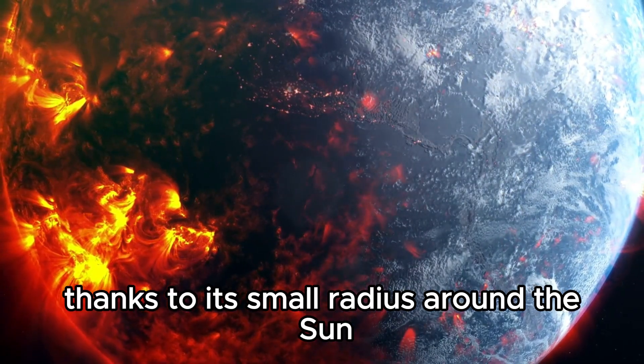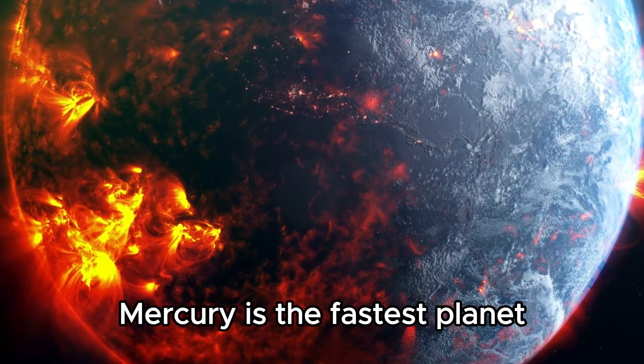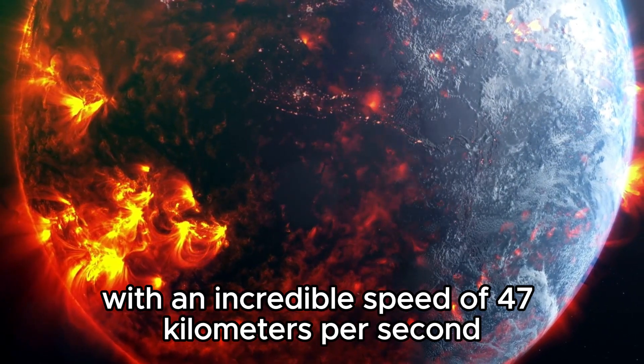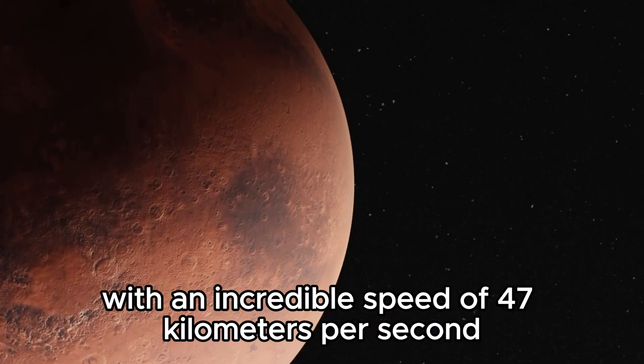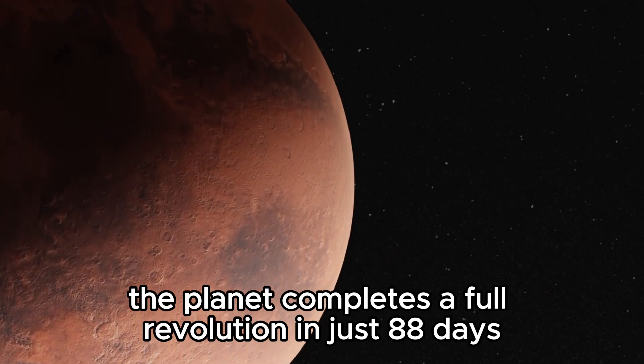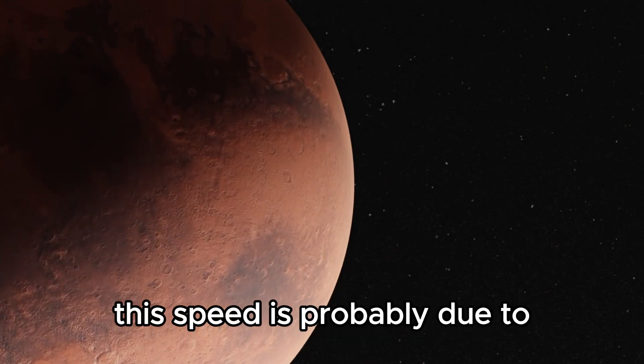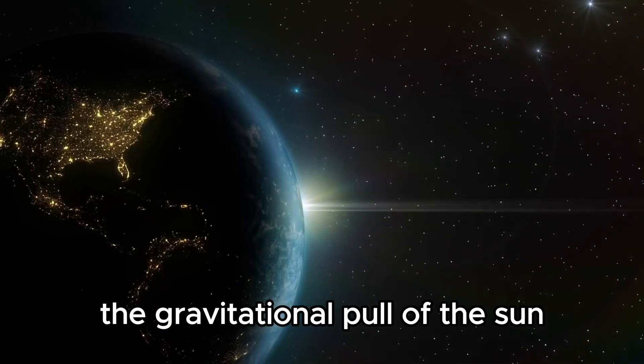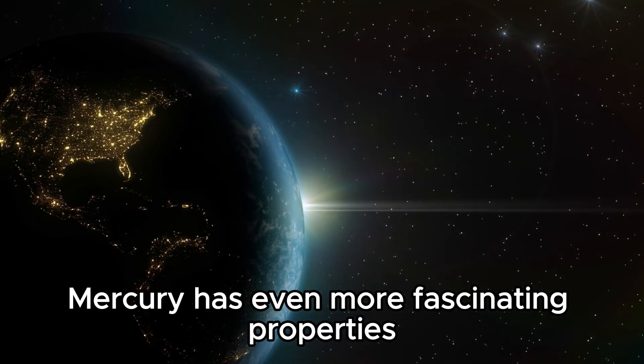Thanks to its small radius around the Sun, Mercury is the fastest planet with an incredible speed of 47 kilometers per second. The planet completes a full revolution in just 88 days. This speed is probably due to the gravitational pull of the Sun. Mercury has even more fascinating properties.